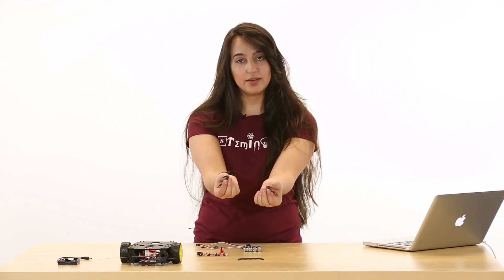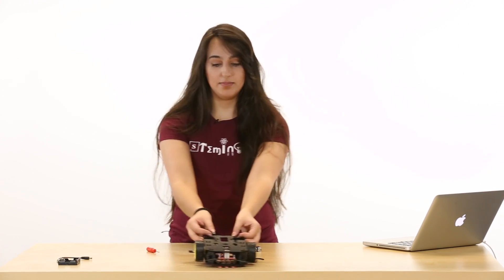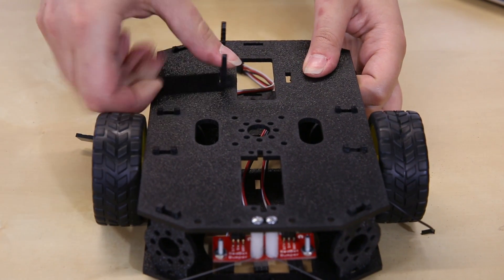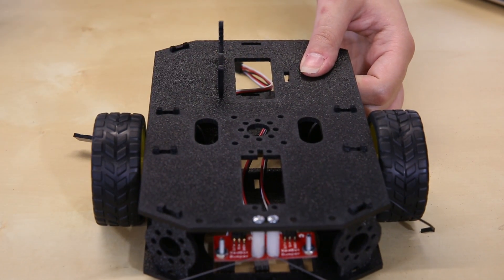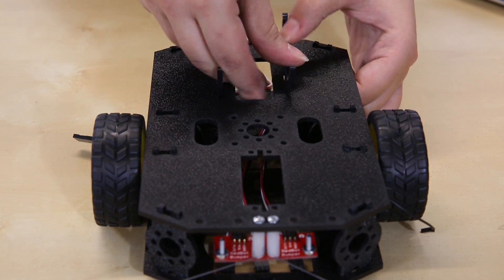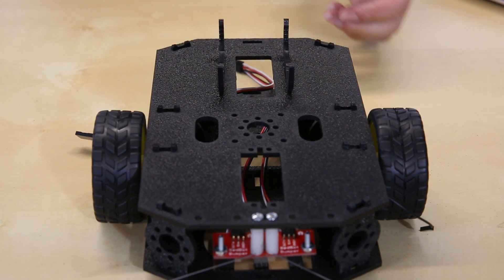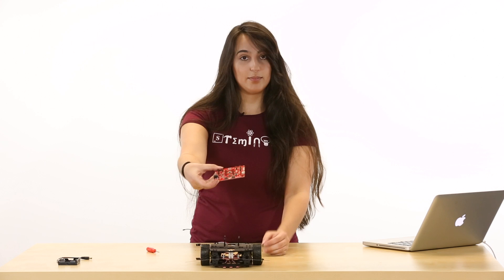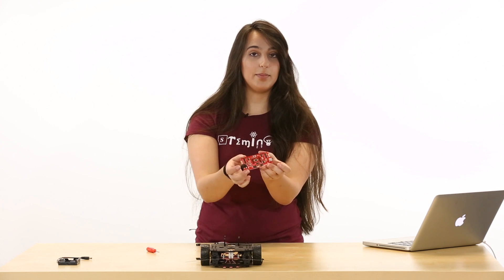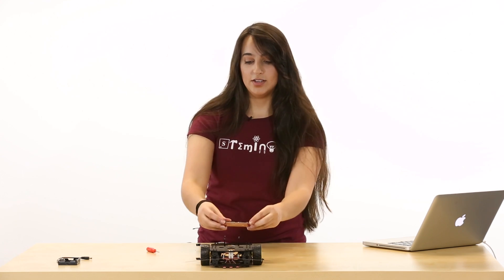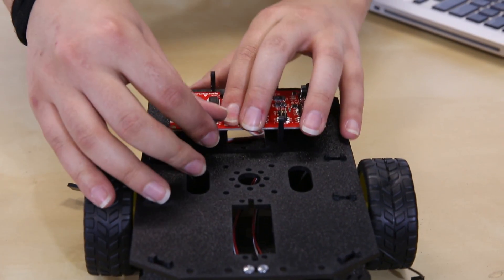Now we're going to attach our main board mounts right onto the top. It's just right there, the only two that haven't been used yet. And then we can snap our red board or our red bot board or any Arduino directly into those with the different sizes.